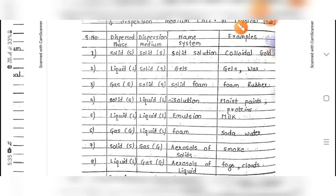When dispersed phase is gas and dispersion medium is liquid, the system is called foam — example: soda water. When dispersed phase is solid and dispersion medium is gas, the system is called aerosols of solid — example: smoke. When dispersed phase is liquid and dispersion medium is gas, the system is called aerosols of liquid — examples: fogs and clouds.